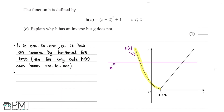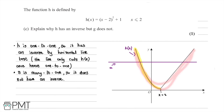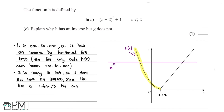On the other hand, g is many-to-one, which means it does not have an inverse. We can see on the graph that a horizontal line intercepts the full curve g of x at more than one point, confirming it fails the horizontal line test and cannot have an inverse.